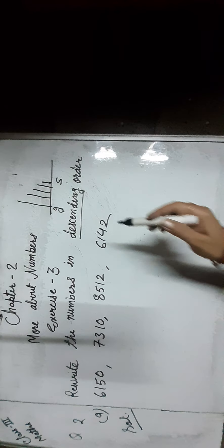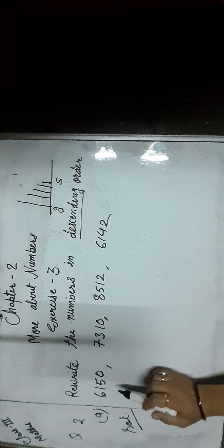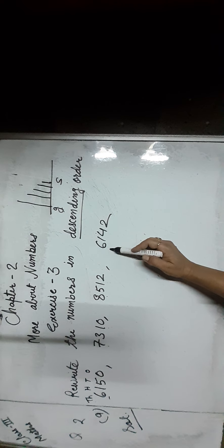Now next question: write the numbers in descending order. Descending means coming down from greatest to the smallest, so we have to find out the greatest number. First we check the number of digits — all numbers have 4 digits. We find the place value of each digit: 1s, 10s, 100s, and 1000s. Then we compare the 1000s place digit first: here 6, 7, 8, and 6. We have to move with the greatest digit. Since 8 is greater than 6 and 7, we first write 8,512.